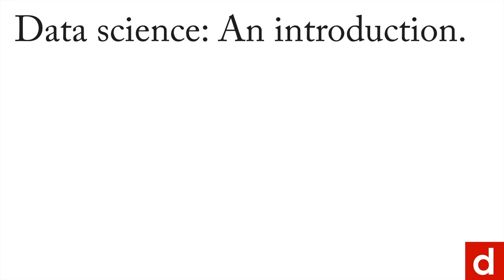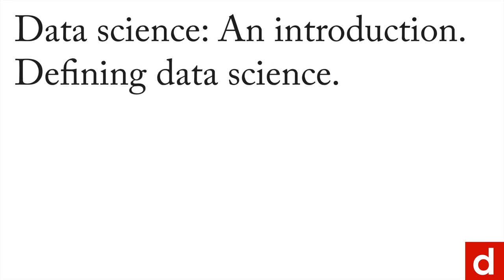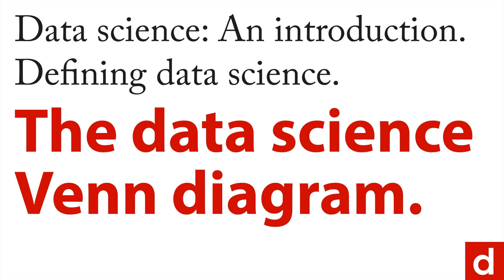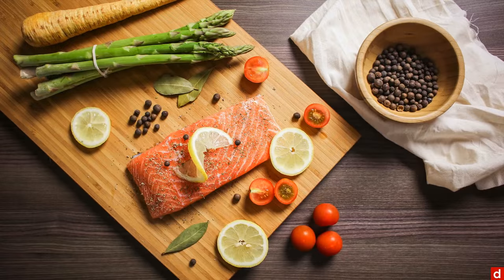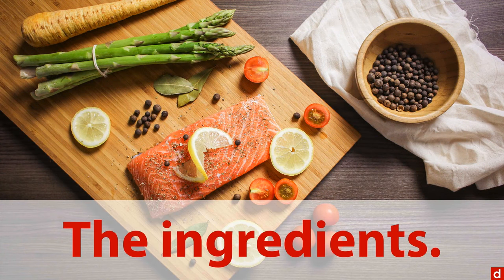Back here in data science, we're going to continue our attempt to define data science by looking at something that's really well known in the field, the data science Venn diagram. If you want to, you can think of this in terms of what are the ingredients of data science.